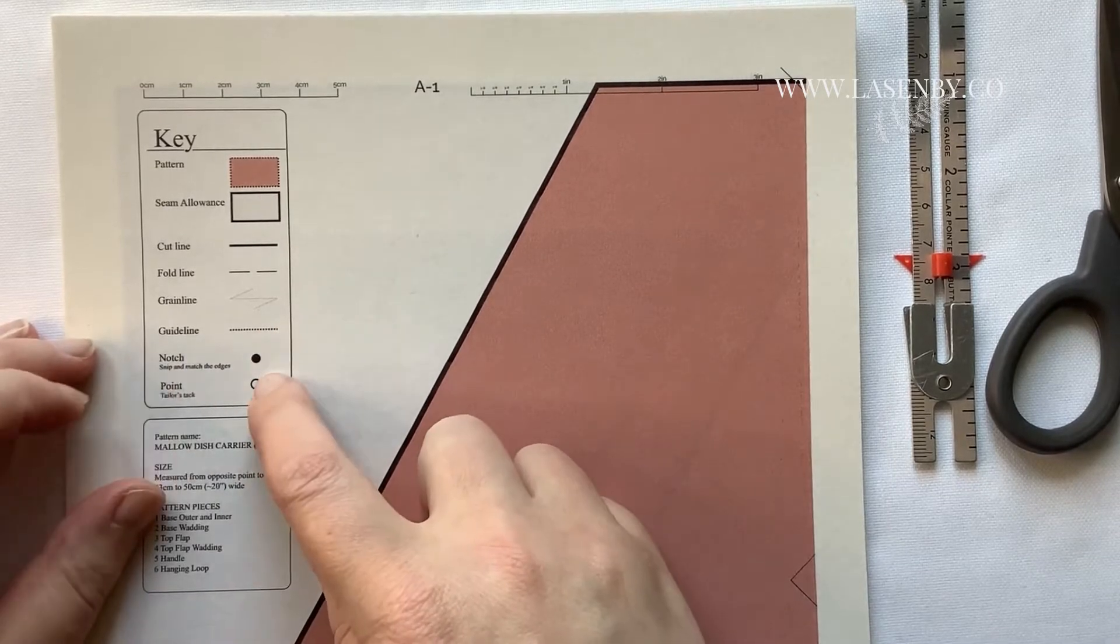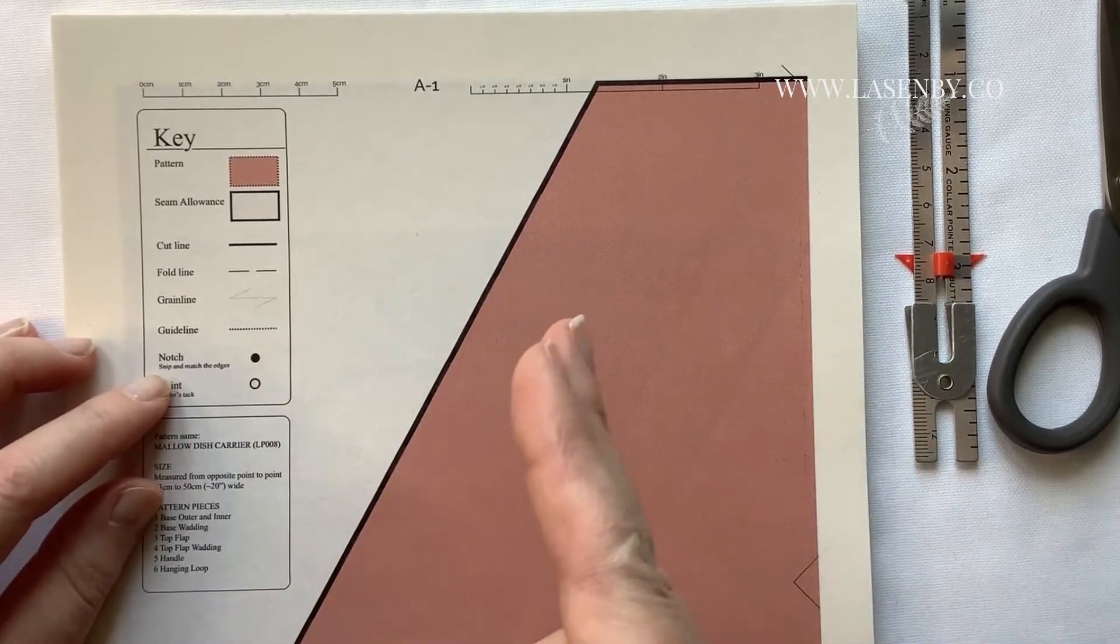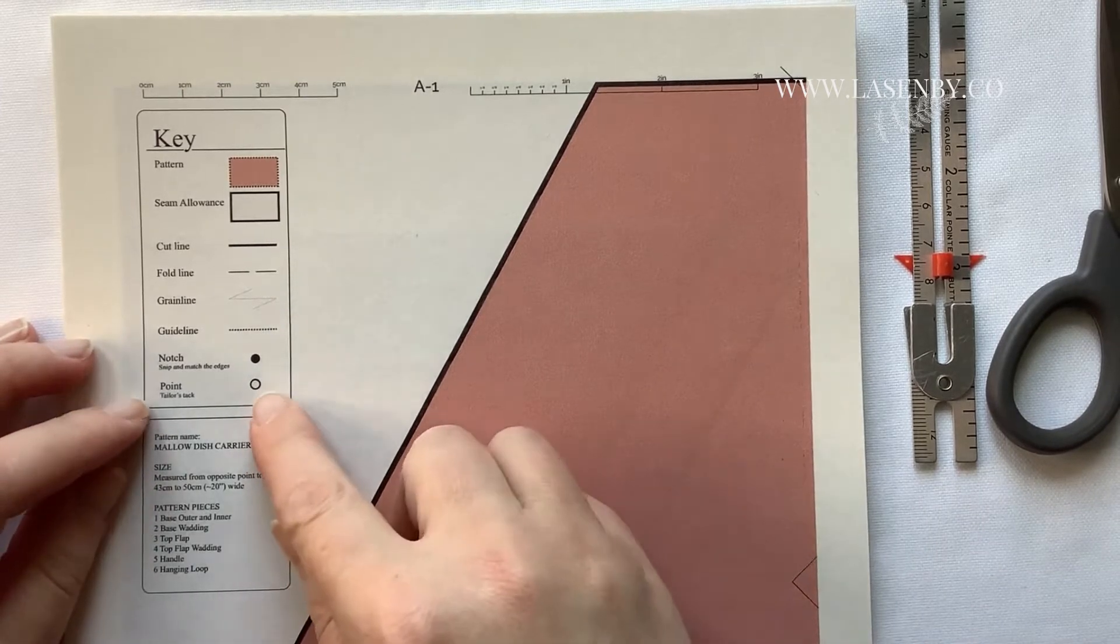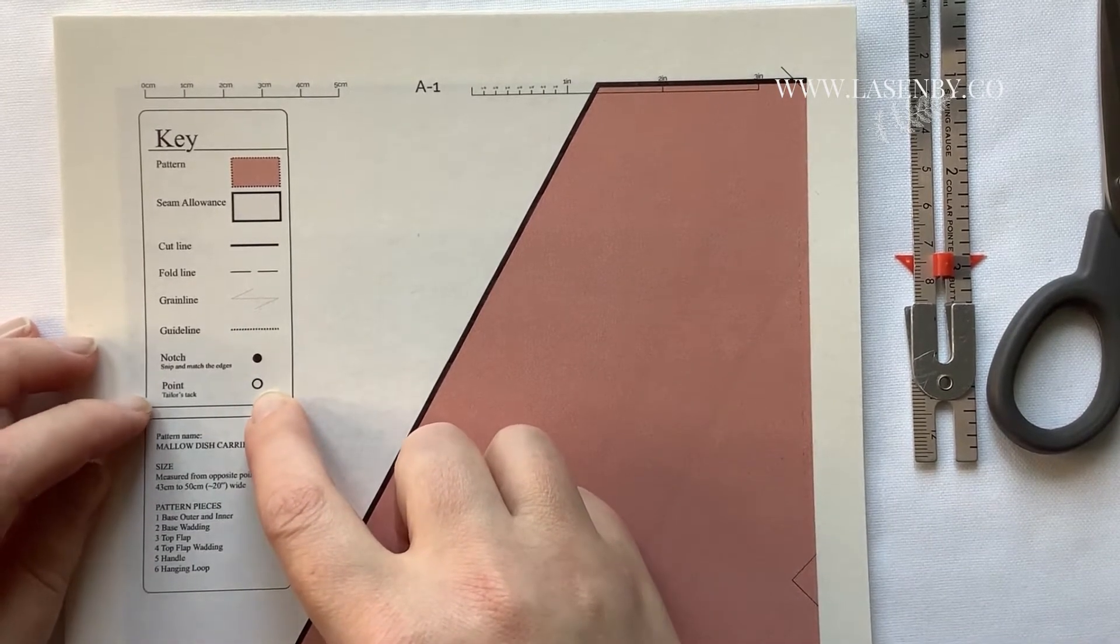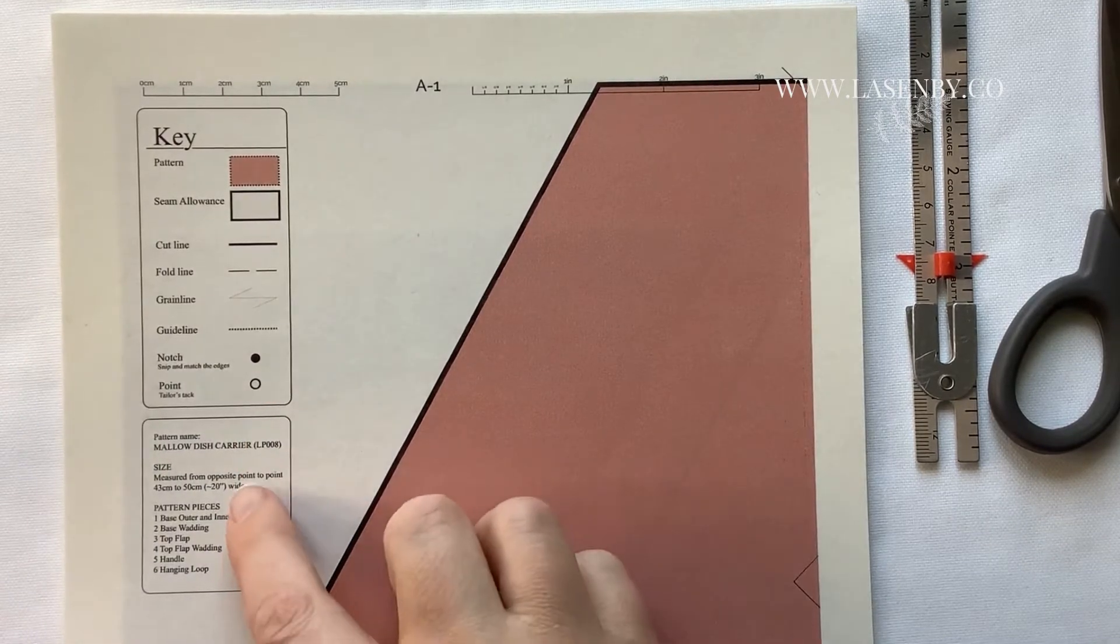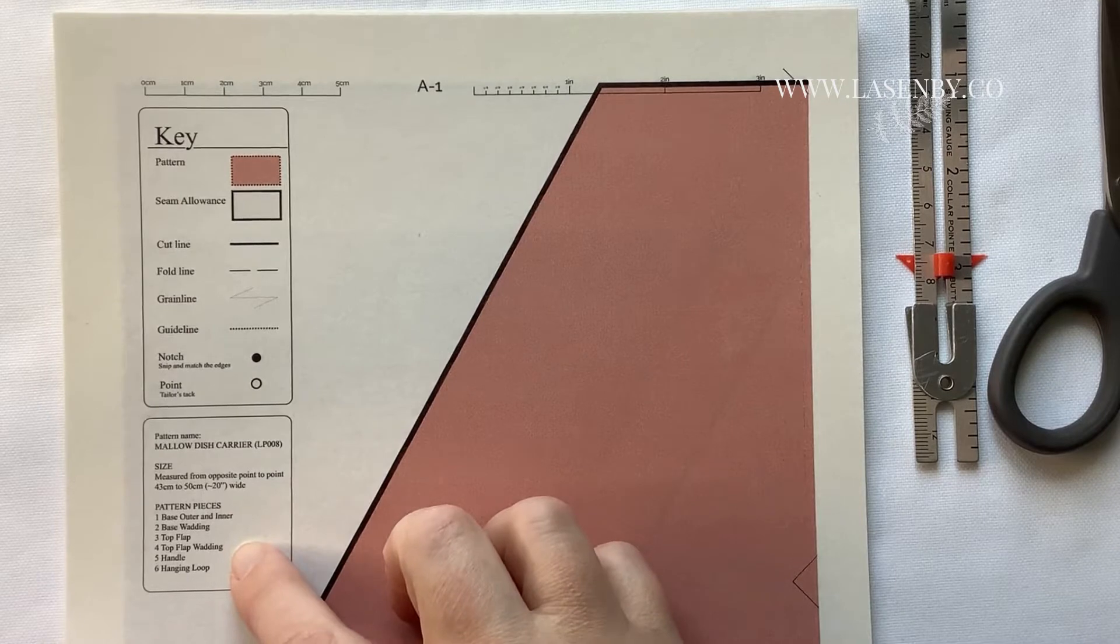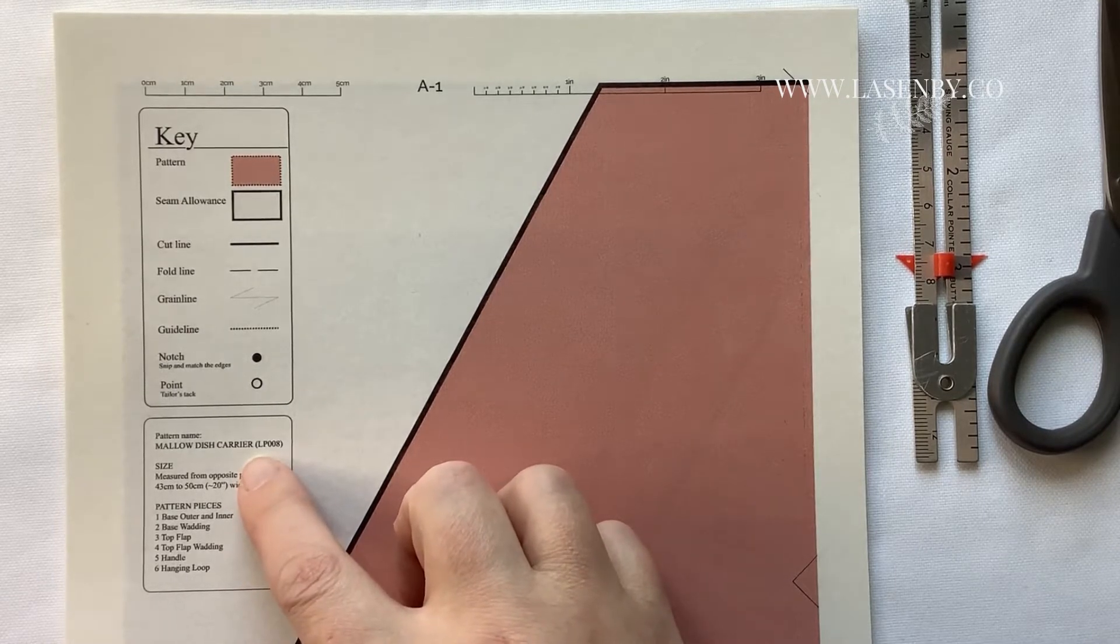That's the stitching line. Notches are when you just snip into the edge of the fabric just to match up two pieces. And this is a tailor's tack point. And then down here we just have a list of the pattern pieces in this pattern and just a brief overview of what the pattern is.